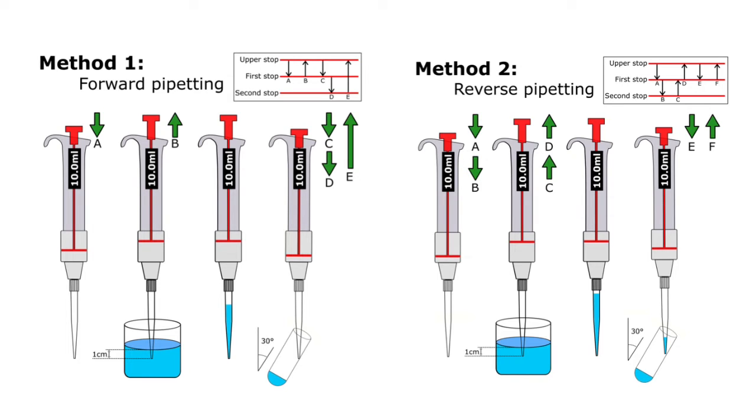We use this first method, forward pipetting, with liquids which have viscosity close to water. And the reverse method is used when we're working with viscous and volatile liquids. The first step here would be different.